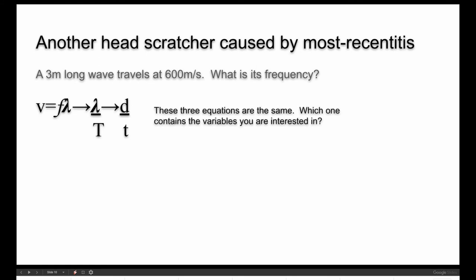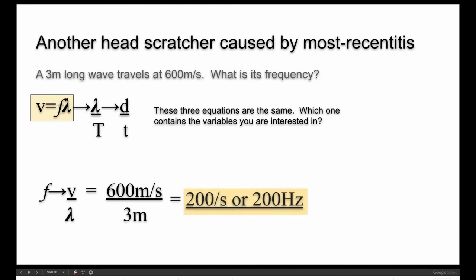So again, find the variables you're interested in. And it's that one. Rearrange to solve for F and we get 200 per second, 200 cycles per second or 200 hertz.